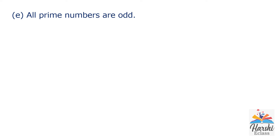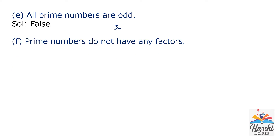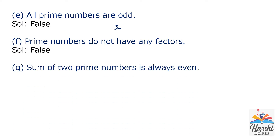Statement E: All prime numbers are odd. It is a wrong statement because there is one even prime number, that is 2. So E is false. Statement F: Prime numbers do not have any factors. It is also a false statement because prime numbers have two factors: 1 and the number itself. Every prime number has two factors. So that is a false statement.